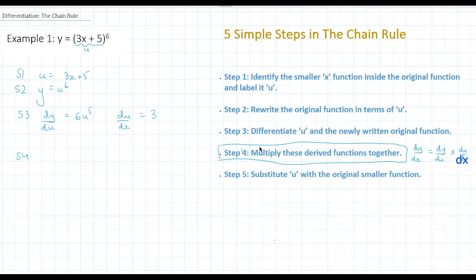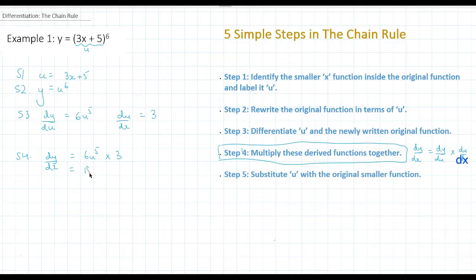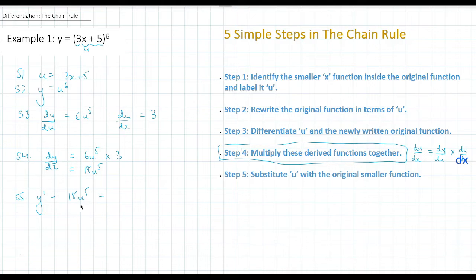Step four: multiply these derived functions together. So dy/dx is going to be 6u to the 5 multiplied by 3, which gives 18u to the 5. Step five: substitute u with the original smaller function. So we replace u with 3x + 5, giving us 18(3x + 5) to the 5. And that's it.